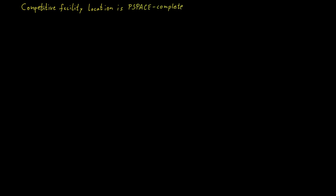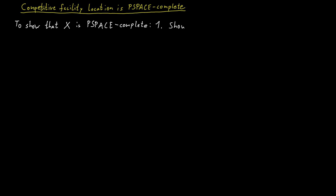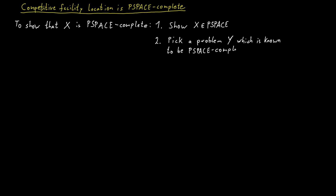To show that a problem is PSPACE-complete, we follow the same general strategy as when establishing NP-completeness. To show that a problem X is PSPACE-complete, we first show that X is contained in PSPACE so that the problem can be solved in polynomial space. The second step is to take a problem already known to be PSPACE-complete and reduce it to X in polynomial time via a Karp reduction.